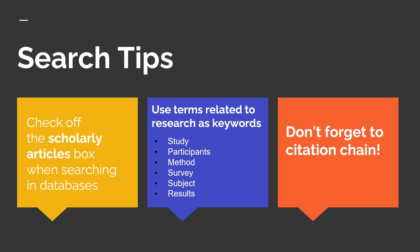One last tip is to use articles you've already found to locate more articles on your subject. This is called citation chaining. Scholarly sources will always reference lots of literature in the field, especially in literature review sections or even in introduction sections. If you see studies mentioned, you can use the citations in the works cited section to track those down.